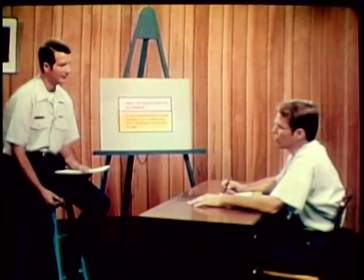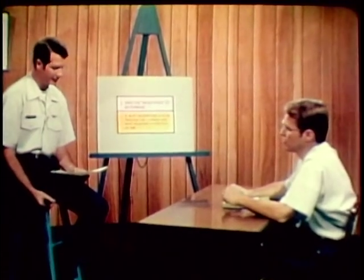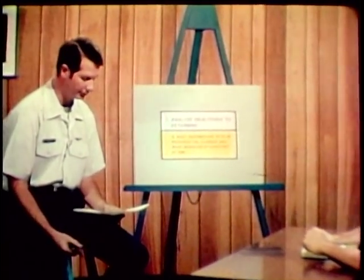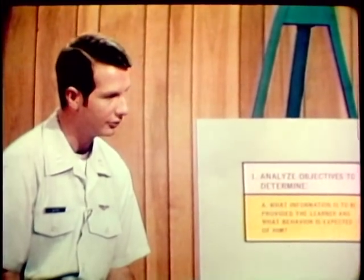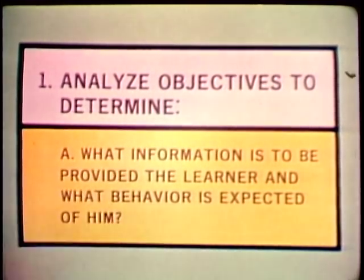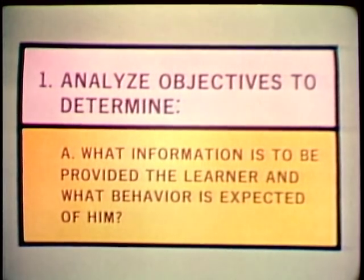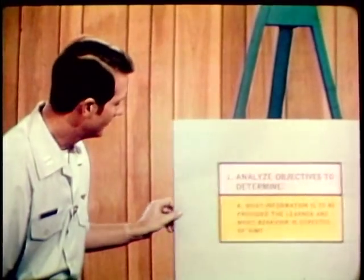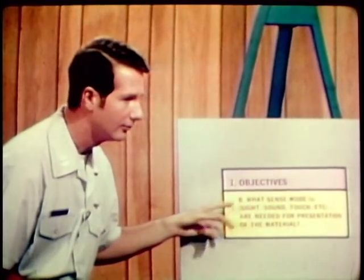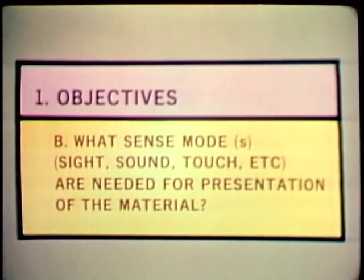Okay, Steve, what's our main objective? Coming right up. Given a T-17 aircraft with operating J-91-T-3 engines, TO, and the associated flight manual checklist, follow prescribed procedures to start both engines without error or instructor assistance. Okay, now we need to analyze that objective — first of all, for the information and the behavior involved. The information we're going to provide will be specific procedures for starting the engine in the form of a checklist. The main skill or behavior here is following the checklist exactly. The primary sense mode will be sight, since the student must respond to appropriate visual cues on the checklist.